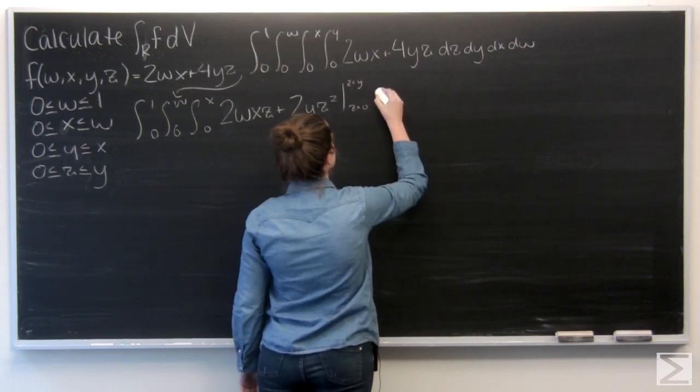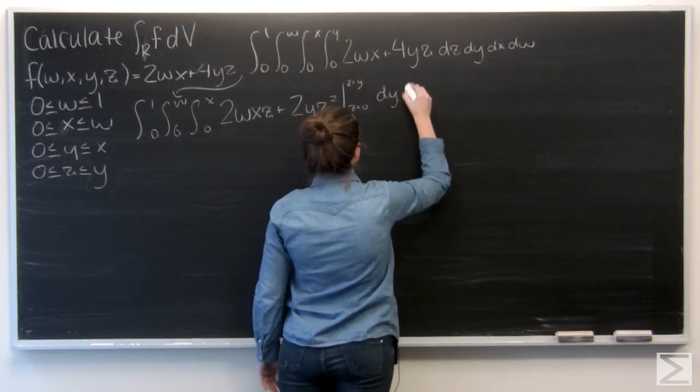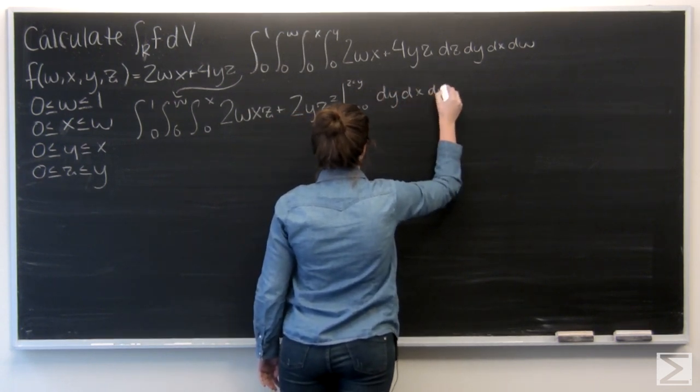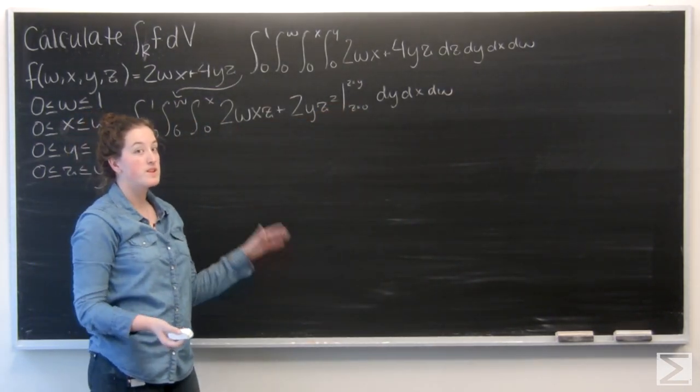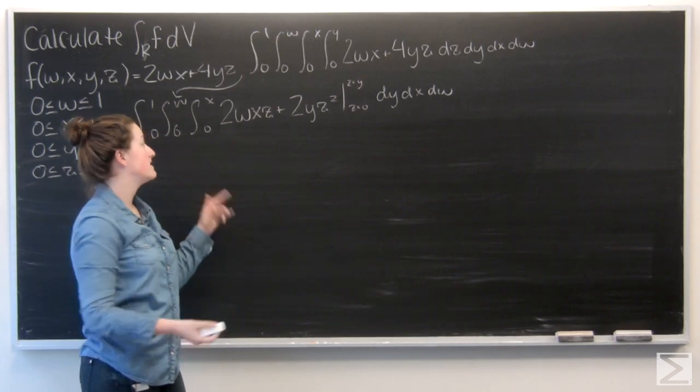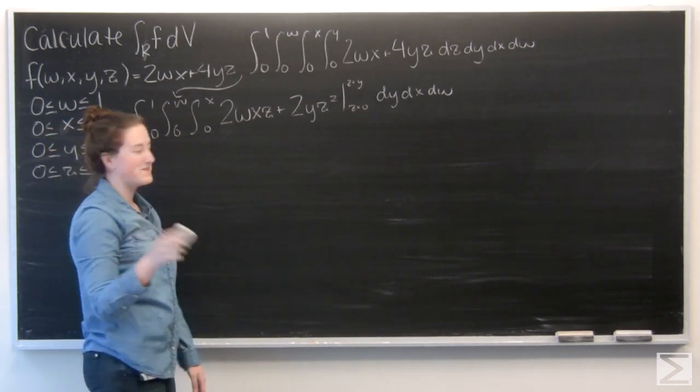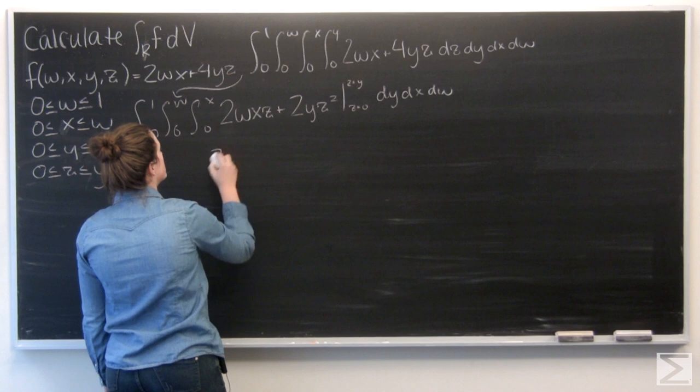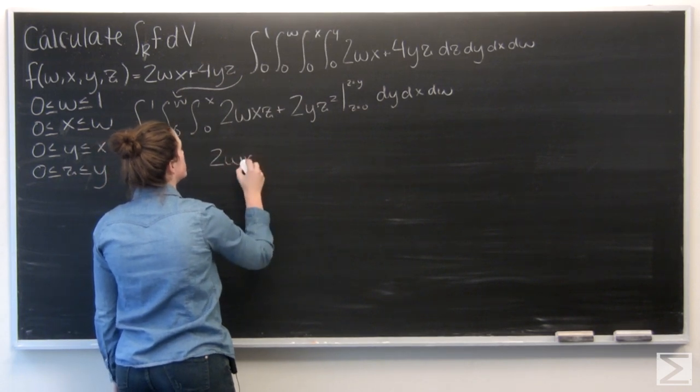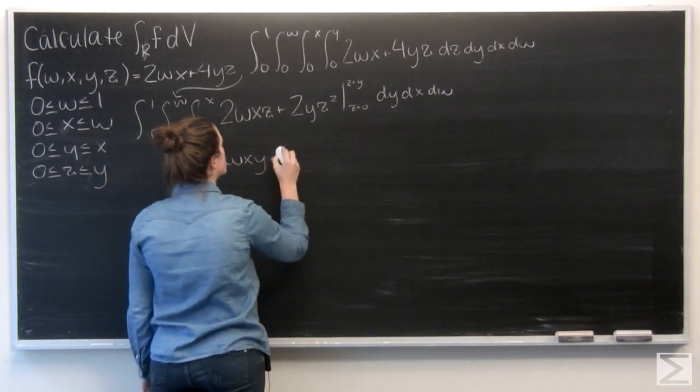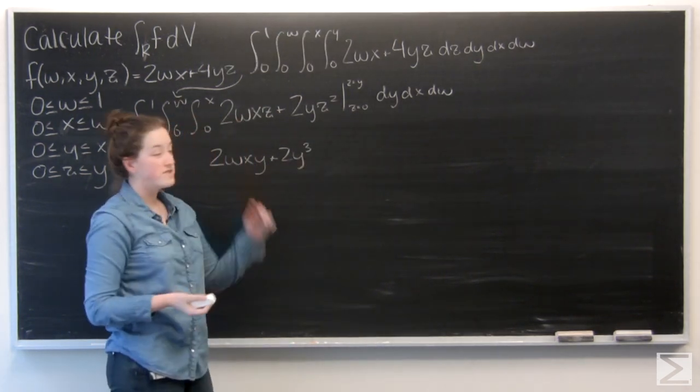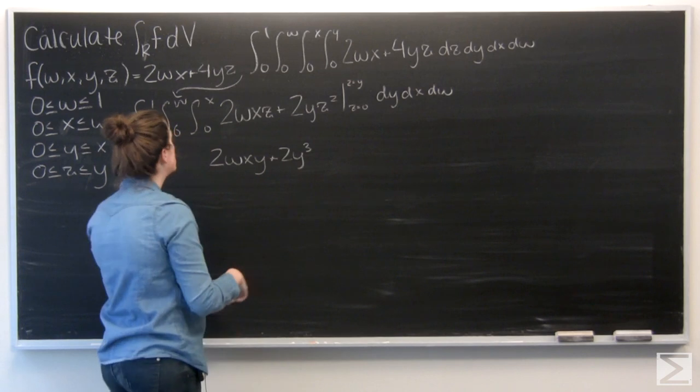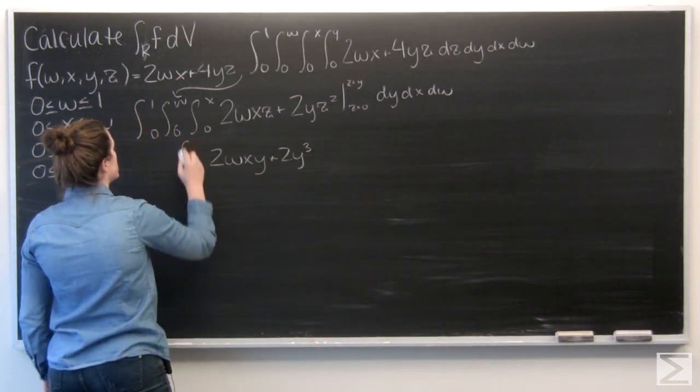Let me go ahead and write the rest of these in. Okay. So to evaluate from 0 to y, first I'm just going to plug y everywhere that I see a z. So 2wxy, 2y to the third. And then for z equals 0, both of these terms are going to be 0. Write everything in around it.